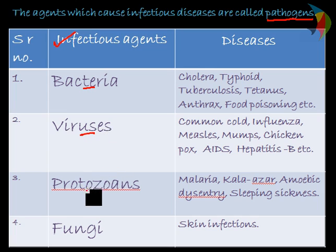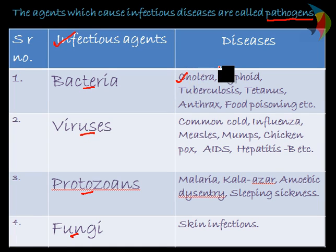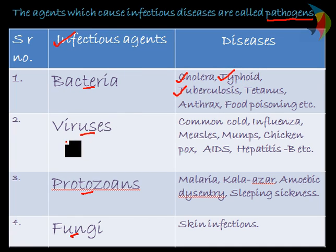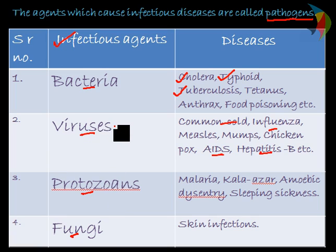The infectious agents may be bacteria, viruses, protozoans, or fungi. Bacteria causes diseases like cholera — Vibrio cholerae causes cholera, Salmonella typhi causes typhoid, Mycobacterium tuberculosis causes tuberculosis. Different bacteria cause different types of diseases. Viruses cause diseases like common cold, influenza, AIDS, and hepatitis B — all these are examples of diseases caused by viruses.